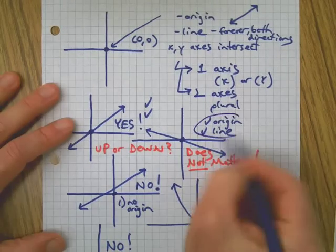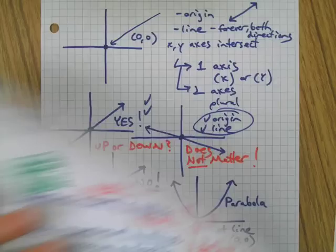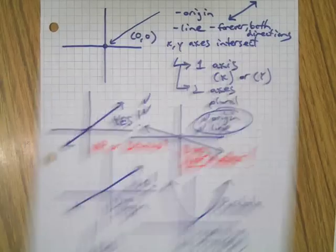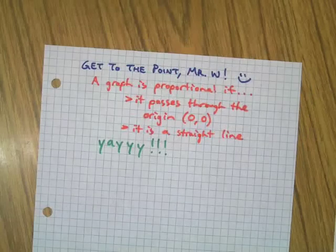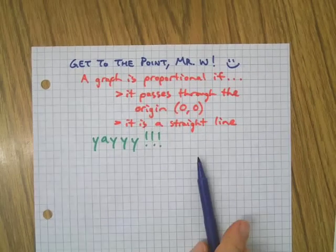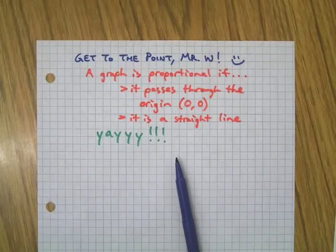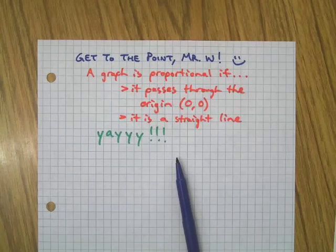And to get a yes out of the deal, has to pass through the origin and be a straight line, which gets us back to our point. Oh no, where's the point? I'm just looking for the point. There it is. There's the point. A graph is proportional if it passes through the origin and it's a straight line.